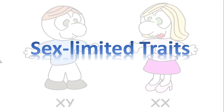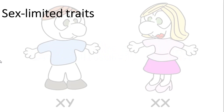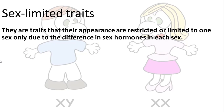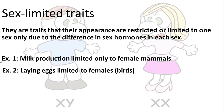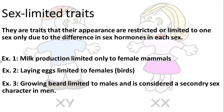The last type of sex-related inheritance is sex-limited traits. From the name, their appearance is restricted or limited to only one sex, due to differences in sex hormones. Sex hormones affect both sex-limited and sex-influenced traits, but not sex-linked traits. Examples include milk production in female mammals, laying eggs limited to females in birds, and growing a beard, which is limited to males as a secondary sex character.